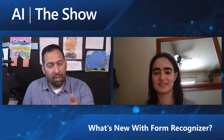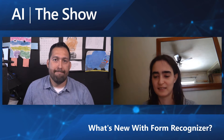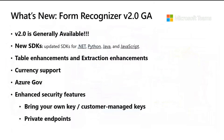We've had a ton of updates this summer. First, V2.0 is now generally available — the first time we've taken Form Recognizer to GA. We also have new SDKs updated for .NET, Python, Java, and JavaScript. There are big enhancements to table extraction and table detection, support for global currencies, support for Azure Gov, and enhanced security features like customer-managed keys and private endpoints.